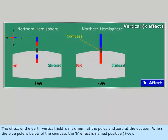The effect of the Earth's vertical field is maximum at the poles and zero at the equator. When the blue pole is below the compass, the K effect is named positive.